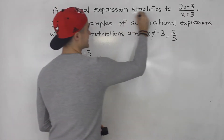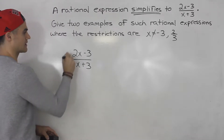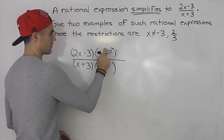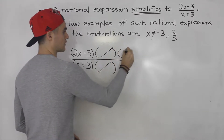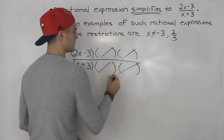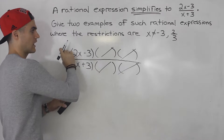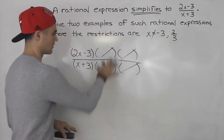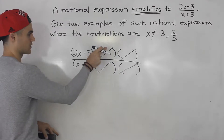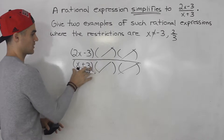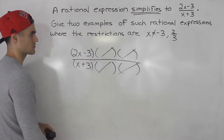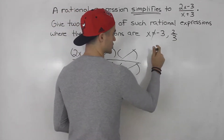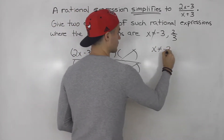So what does it mean when they say it simplifies to that? Well, what it means is that there were potential brackets before that were the same — that canceled out. There could have been multiple brackets, so the original rational expression could have been a higher degree in the numerator and denominator than the one we are given.